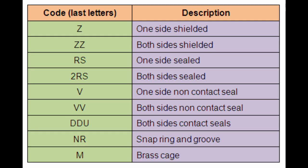Now we can see about shielding, sealing, and specialty of bearing and bearing number. The last letters of the bearing number indicate the availability or type of shielding or sealing and other specialty in the bearing. Thus, in case of bearing 6305ZZ, the last letters ZZ means the bearing is shielded from both sides.